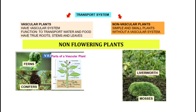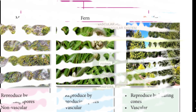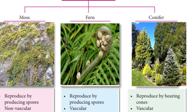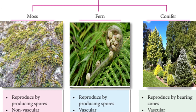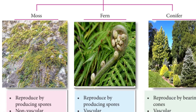Vascular plants have vascular cells. They have true roots, stem, and leaves. The function is to transport water and food. Meanwhile, non-vascular plants are very simple and small, without the presence of vascular systems. Here are some examples of mosses, ferns, and conifers.